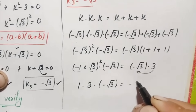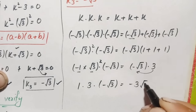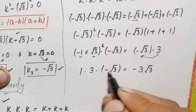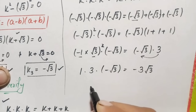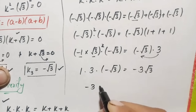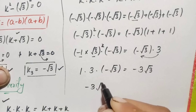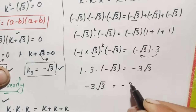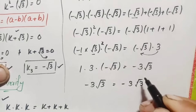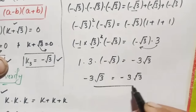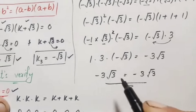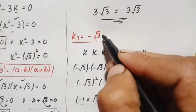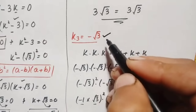Moving the coefficient to the front, the left side becomes negative 3√3. The right side is negative √3 times 3, which is also negative 3√3. Since both sides are equal, k₃ equals negative √3 is also the exact and correct value of k in this problem.